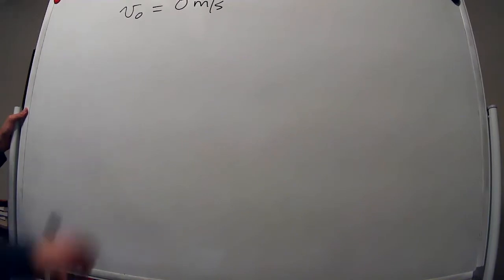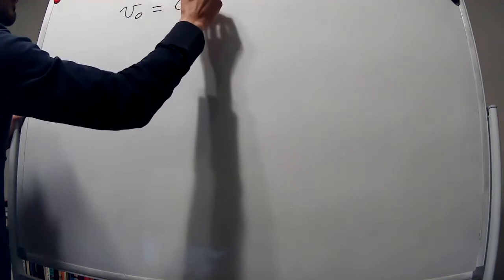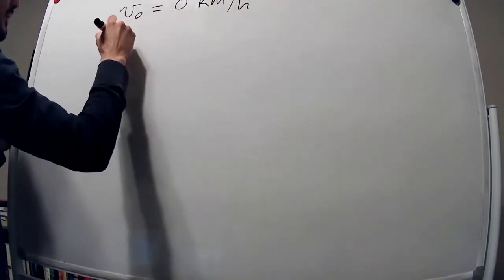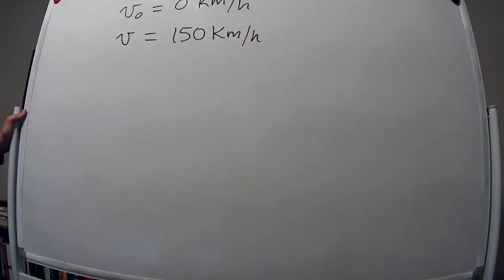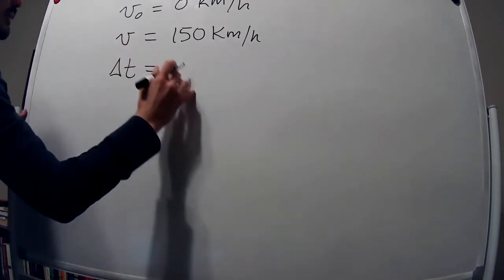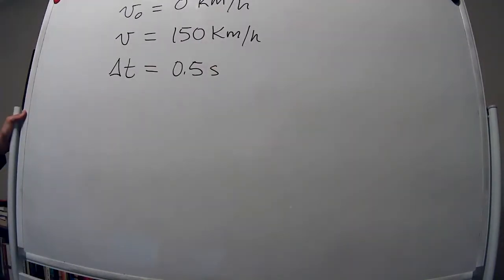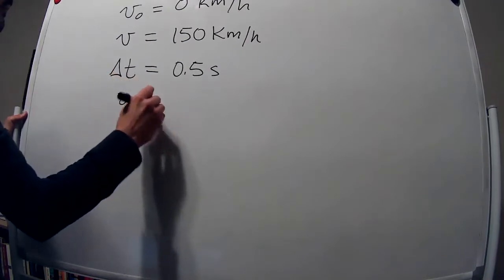The first warmup problem says: when you sneeze, the air in your lungs accelerates from rest to 150 kilometers per hour in approximately 0.5 seconds. What is the acceleration of the air in meters per second squared? The initial velocity is zero meters per second because you start from rest. The final velocity is 150 kilometers per hour, and the delta t is 0.5 seconds. We are asked to find the acceleration.